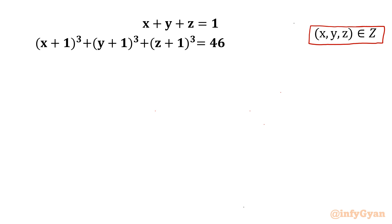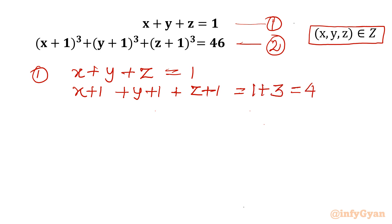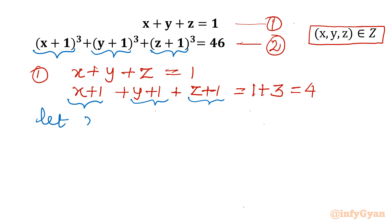Let's get started by considering given equations 1 and 2. Our first equation is x plus y plus z equal to 1. Now I will add 3 to both sides, writing it as x plus 1 plus y plus 1 plus z plus 1 equals 4 on the right-hand side. Now you can see equation 2 has x plus 1, y plus 1, z plus 1. So let's consider x plus 1 equal to a, y plus 1 equal to b, z plus 1 equal to c.